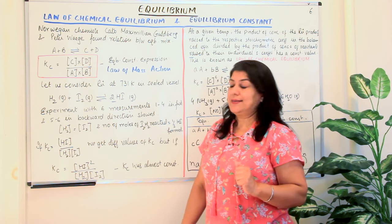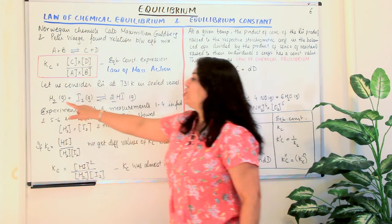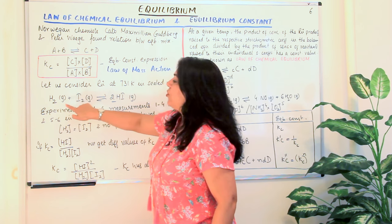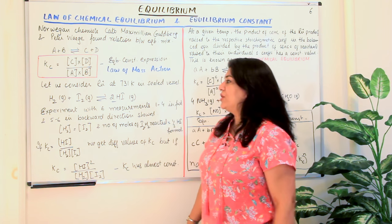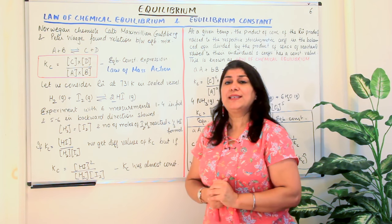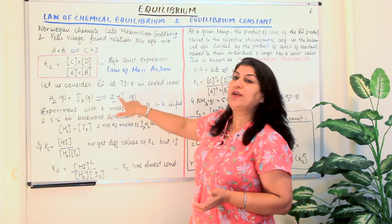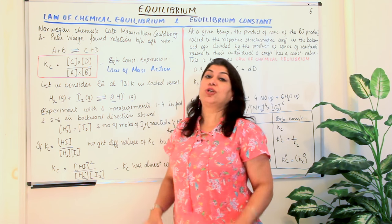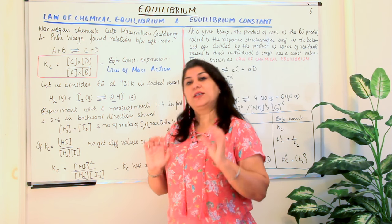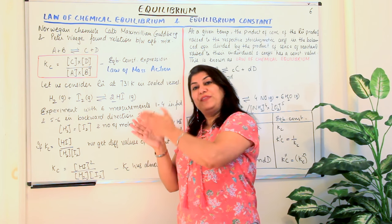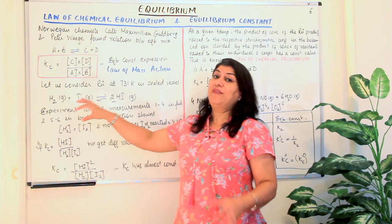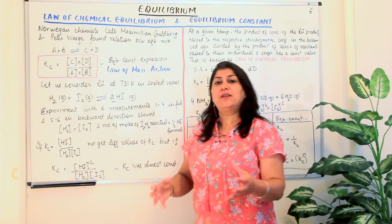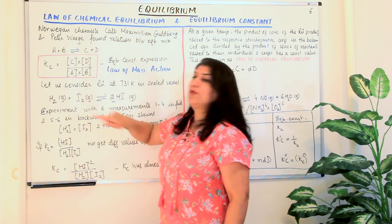This experiment was carried out six times. In the first four attempts, scientists took different initial concentrations of hydrogen and iodine and waited for equilibrium to be established. When equilibrium was established, they measured the concentrations of hydrogen iodide, iodine, and hydrogen — that is, the remaining concentrations of all reactants and products. So in the first four experiments, using different initial concentrations, they recorded what the equilibrium concentrations of H2, I2, and HI were.